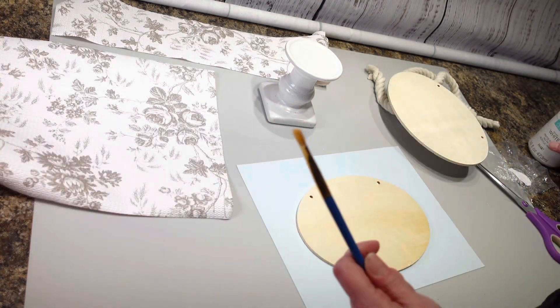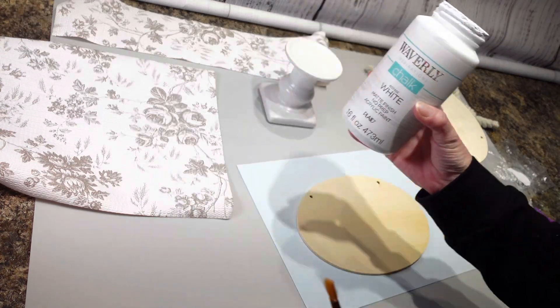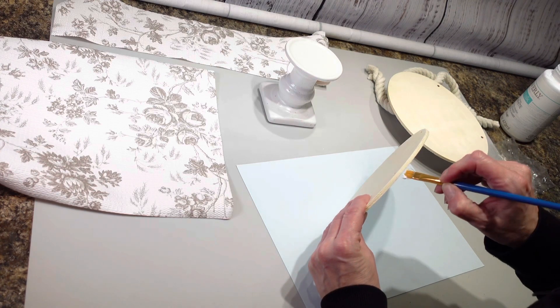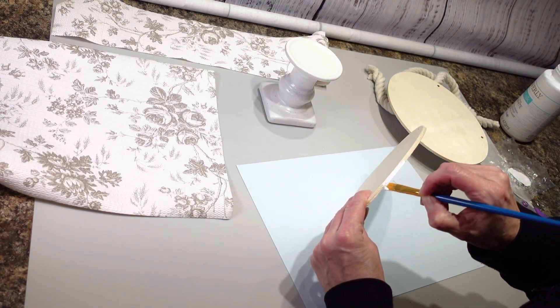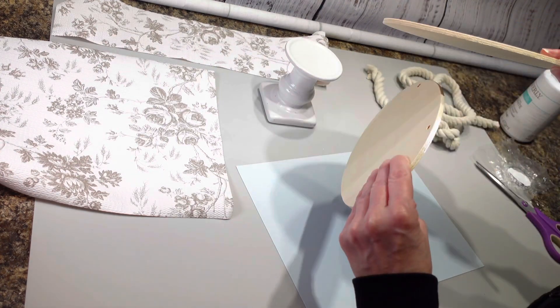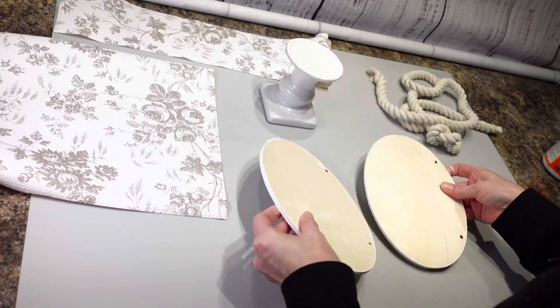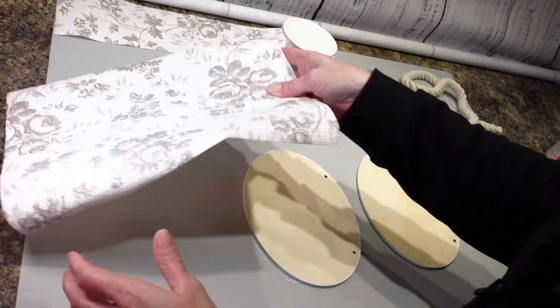I'm just going to be using a little bit of paint on this one. I have my white chalk paint, and I'm going to paint the edges of my sign. I'm going to paint the edges all the way around on both of these. Now that I have those edges painted, which is optional, you don't have to do that by the way.